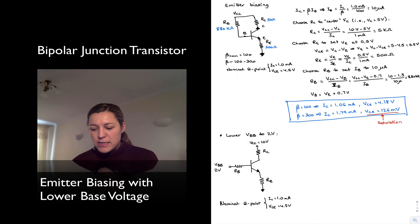Now notice that all my calculations from the previous example still apply up to the point where I calculate the value of Rb. So my IC is still going to be equal to beta times IB, which means my IB needs to be 10 microamps.